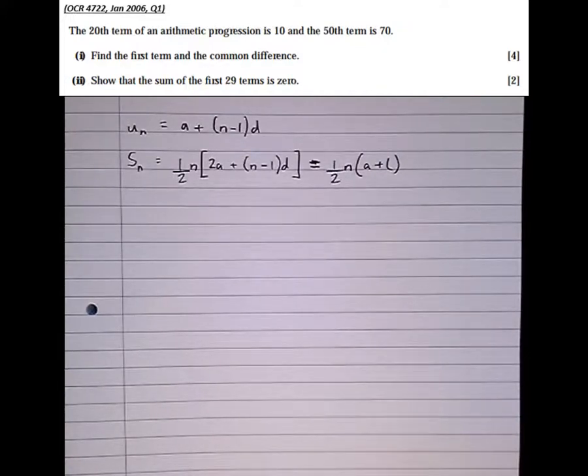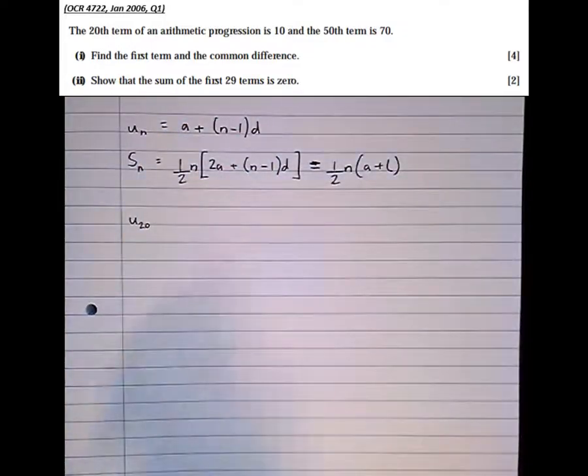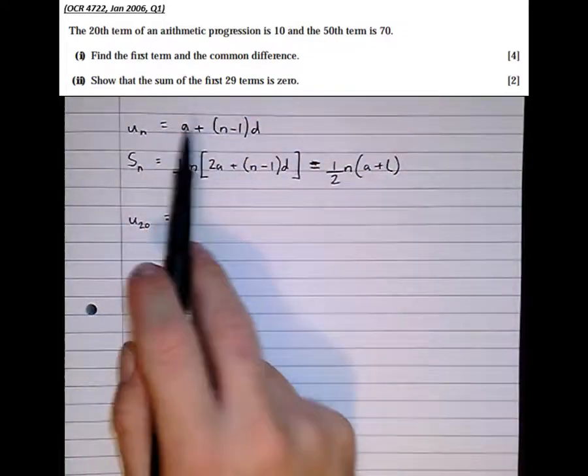it says the 20th term of an arithmetic progression is 10. Okay, the 20th term is 10, so u20, the 20th term. The formula for that, according to this, so the 20th term, n equals 20,